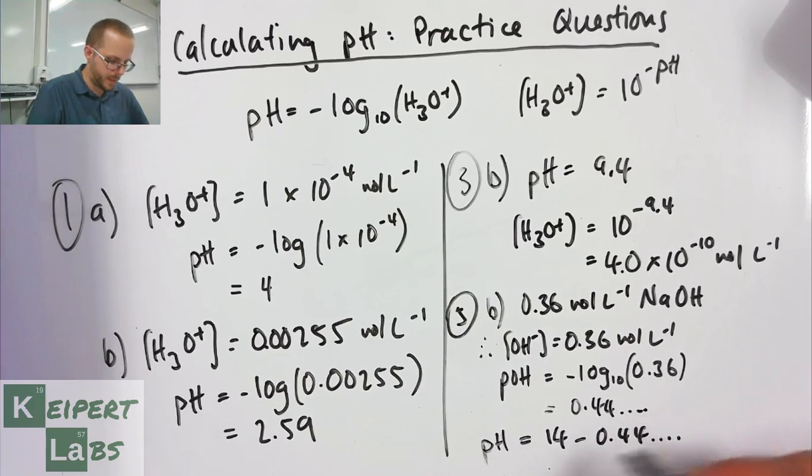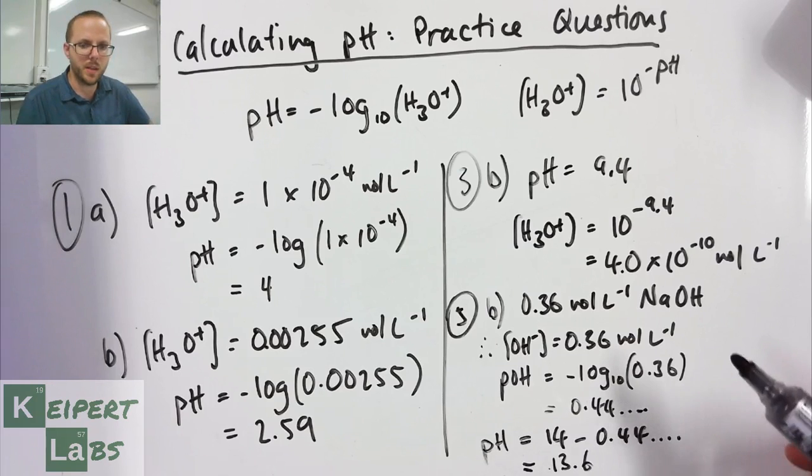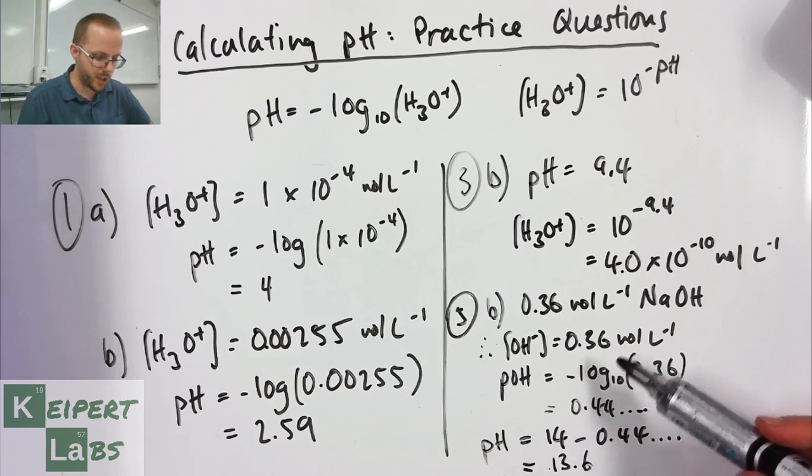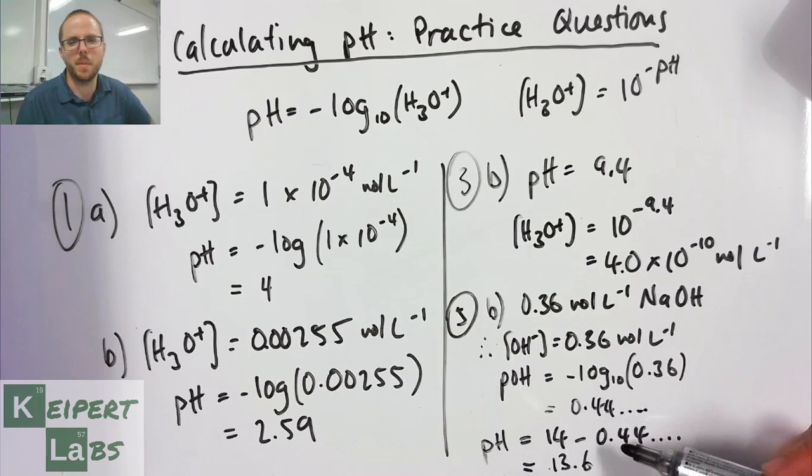My pH is going to equal 14 minus this number, because that's the relationship that we get. And so I get a value of, I'm going to go to three significant figures, 13.6.